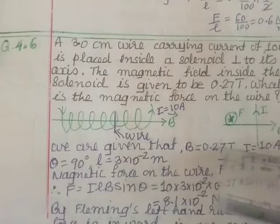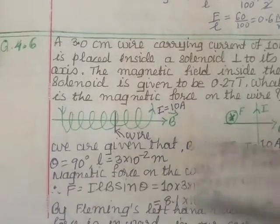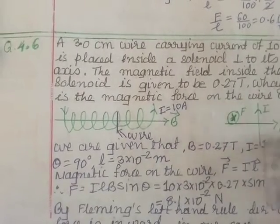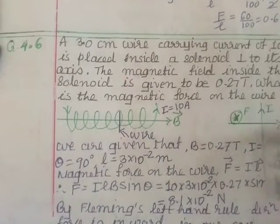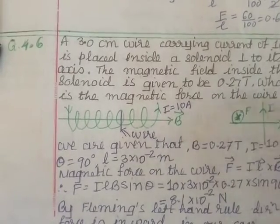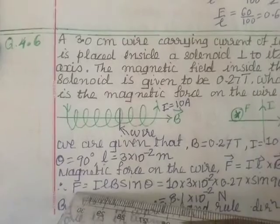We are given that B is equal to 0.27 Tesla, current is 10 amperes, theta is 90 degrees between the axis and the magnetic field axis and the current. The force is given by magnetic force on the wire: F is equal to I L cross B, L cross B means I L B sine theta.